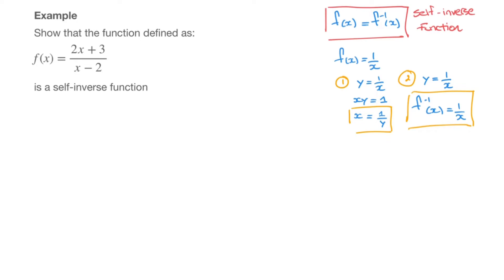There are other self-inverse functions. Another example could be f of x which equals x. You can try for yourself, but if you find this function's inverse, you'll find inverse of f equals x. Graphically, we can recognize self-inverse functions from the fact that they are the mirror images of themselves across the line y equals x.